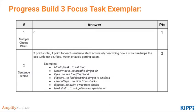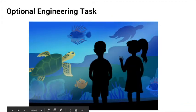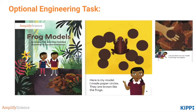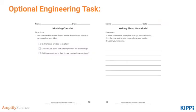Go ahead and pause to look over the scoring guide more carefully. At the end of the unit, there's an optional engineering task where students apply what they know to construct a model for an aquarium that demonstrates how an animal's parts help it survive. Students read the book Frog Models about how two kids use models to test scientific questions, and they use a checklist to create their model.